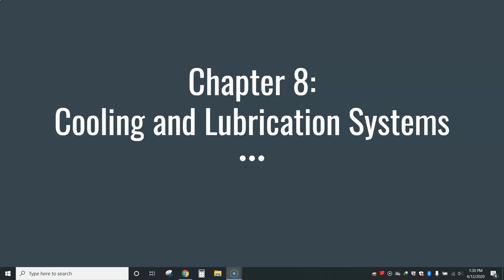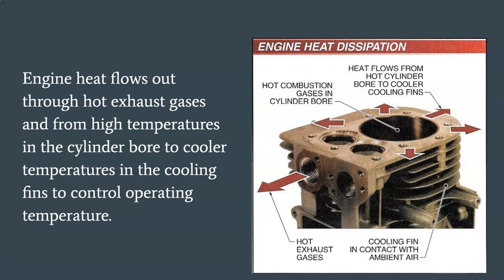Chapter 8: Lubrication System. Engine heat flows out through hot exhaust gases, moving from high temperatures in the cylinder bore to cooler temperatures in the cooling fins to control operating temperature. Like other forms of energy, heat is capable of doing work. Heat flows whenever a temperature difference exists in a material, always flowing from an area of higher temperature to an area of lower temperature.